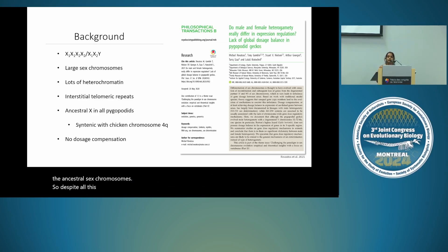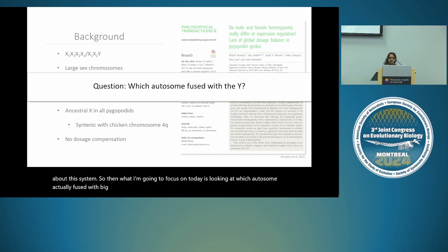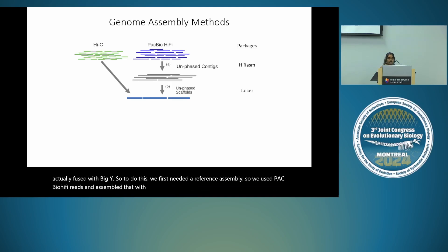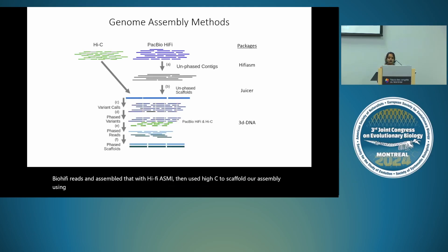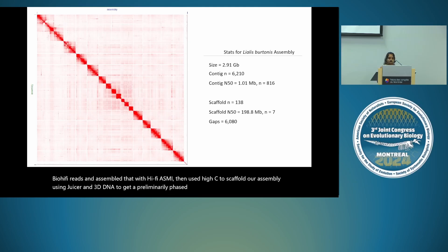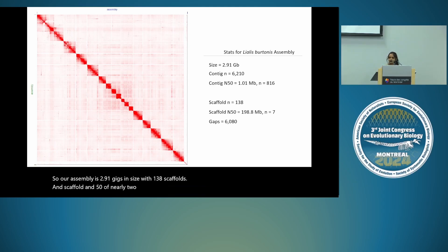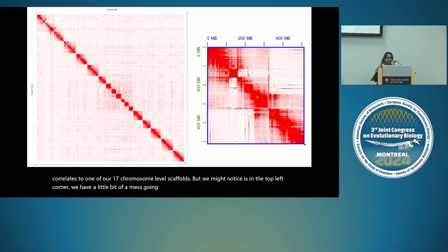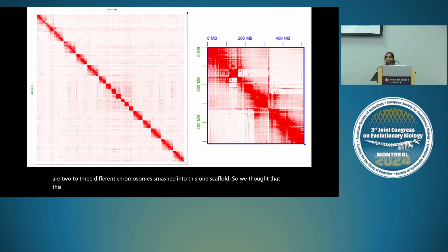Despite all this information, there are still outstanding questions. I'm focusing on which autosome actually fused with the Y. We used PacBio HiFi reads assembled with HiFiASM, then scaffolded with Hi-C using Juicer and 3D-DNA to get a preliminarily phased assembly. Our assembly is 2.91 gigabases with 138 scaffolds and a scaffold N50 of nearly 200 megabases — a very high quality assembly. The Hi-C contact map shows 17 chromosome-level scaffolds, but in the top left corner there appears to be 2–3 chromosomes smushed into one scaffold, likely due to the fusion of an autosome with the sex chromosomes.